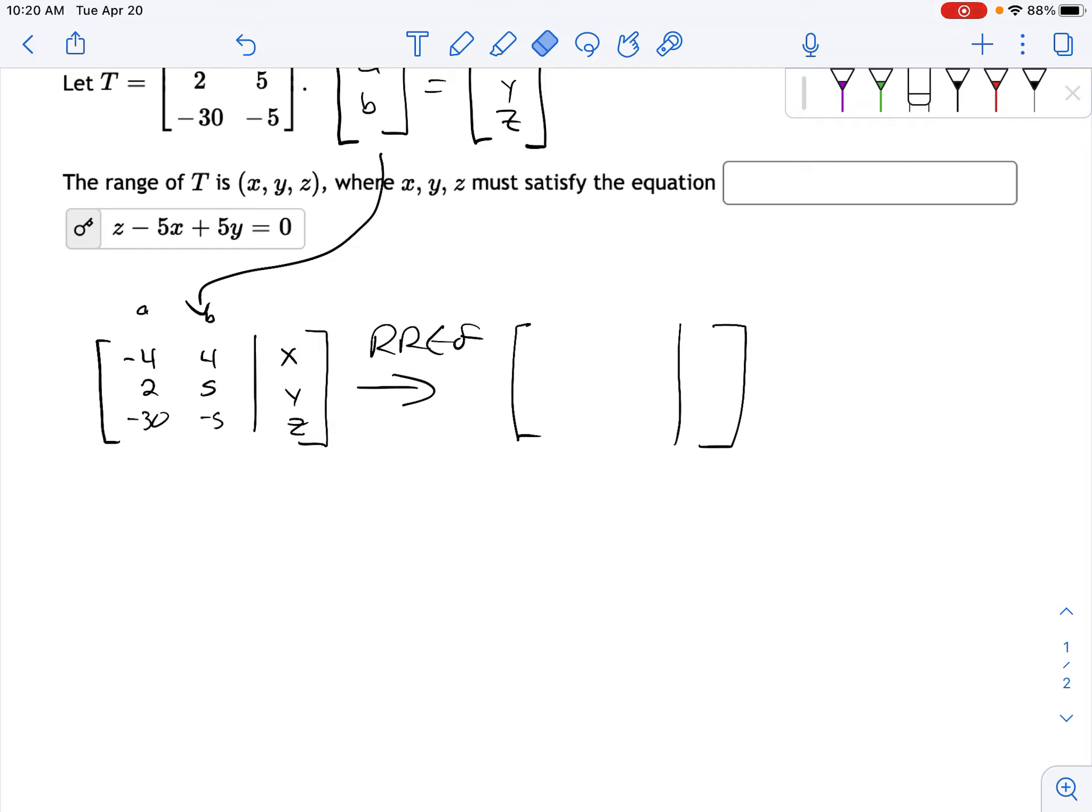what's going to happen here is, since we've only got two variable columns, then we can get a leading one in one of them, and a leading one in the other.